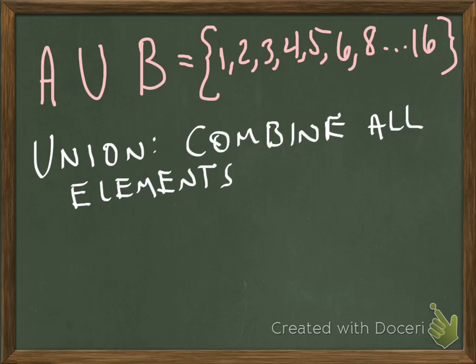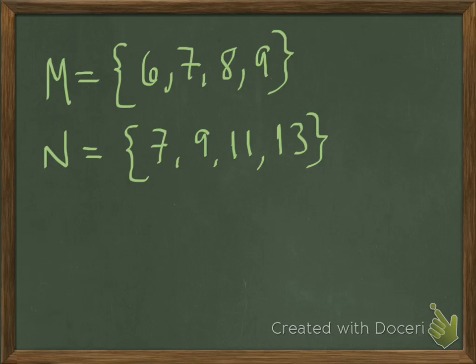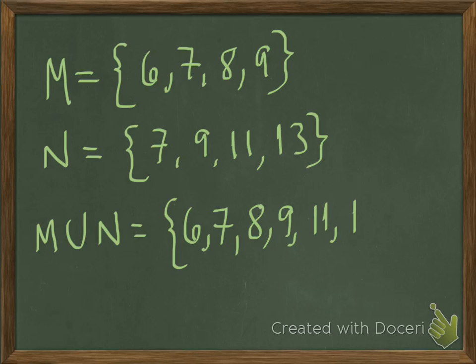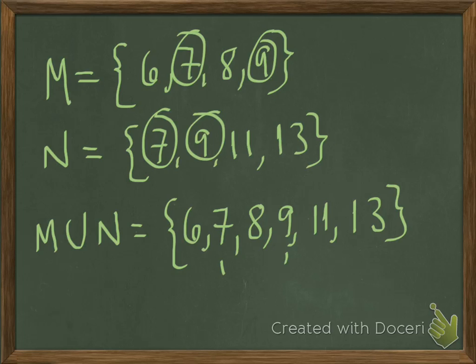For example, here's another shorter example. If you took one set called M: 6, 7, 8, 9, and then the elements of another set N: 7, 9, 11, 13. M union N would be the set 6, 7, 8, 9, 11, 13. Notice that the elements 7, which appears in both, and 9, which appear in both sets, you only write those once. You don't repeat them if they show up more than once. So that's how union is, and it's really a pretty simple idea.